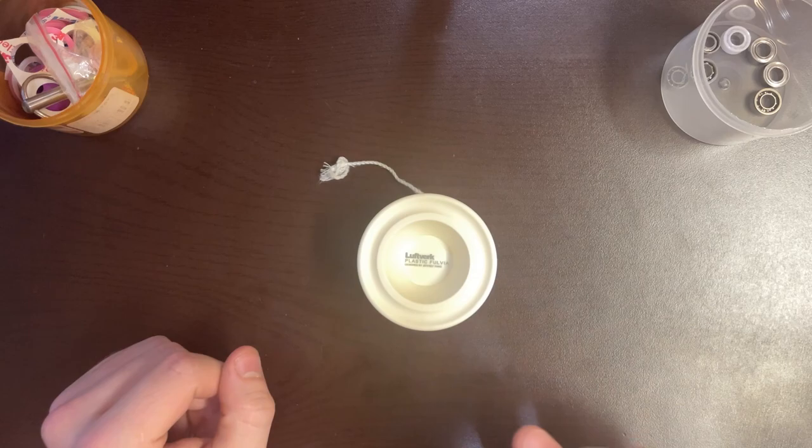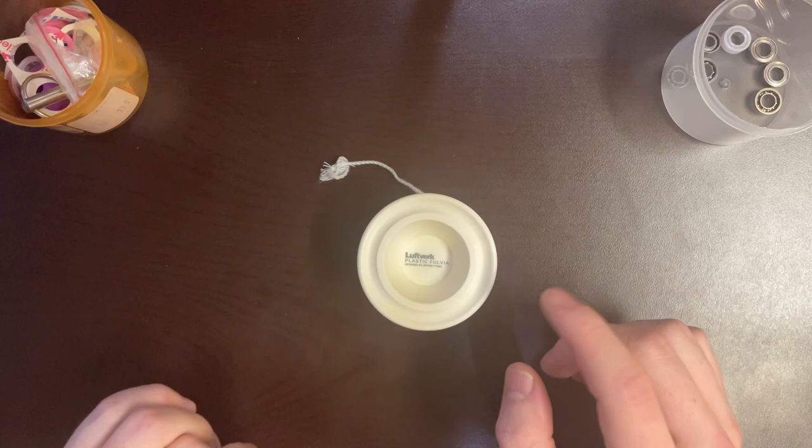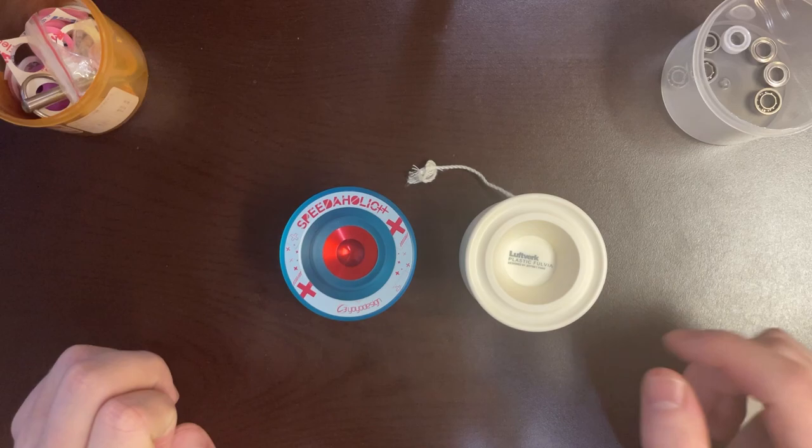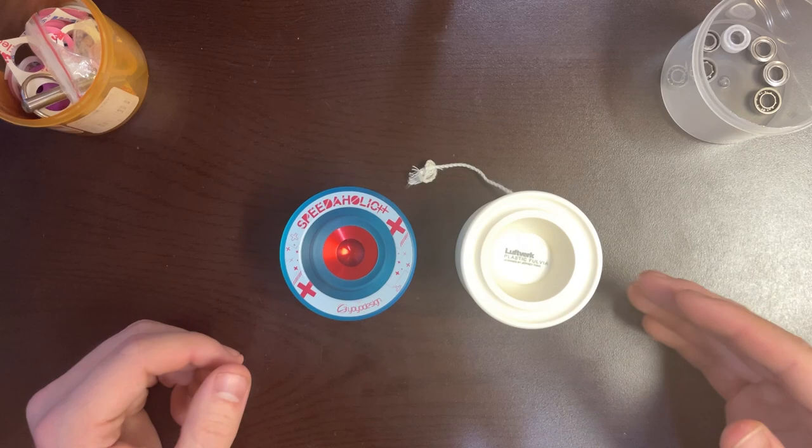There's only one yo-yo that I can really compare to the plastic Fulvia that I own, and that yo-yo is the Speedaholic XX. The Speedaholic XX is kind of the golden standard for competitive plastics. People rave over it, and it's often considered the best plastic that money can buy. Whenever you ask someone, hey, what's the plastic yo-yo that plays like a full metal yo-yo? They usually say the Speedaholic XX.